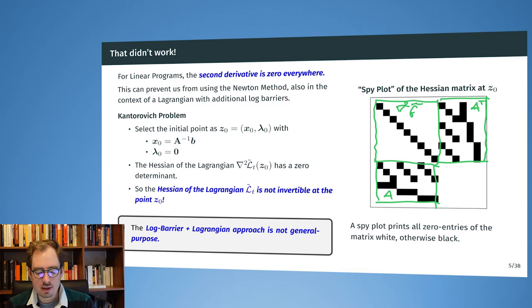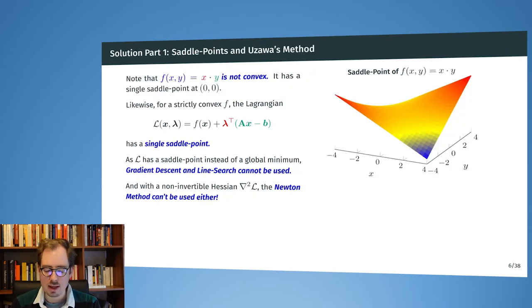And here we see this is the second derivative of the f tilde where we only have some elements on the diagonal. And then the other entries here, so these are then our matrix A from the equality constraints and this is A transposed. So here we find the definition of the Hessian of the Lagrangian. We find that precisely in this SPY plot. And now if we evaluate this Hessian matrix at the initial point, then we will find out that it has a determinant of zero and cannot be inverted. So the Newton method cannot be applied.